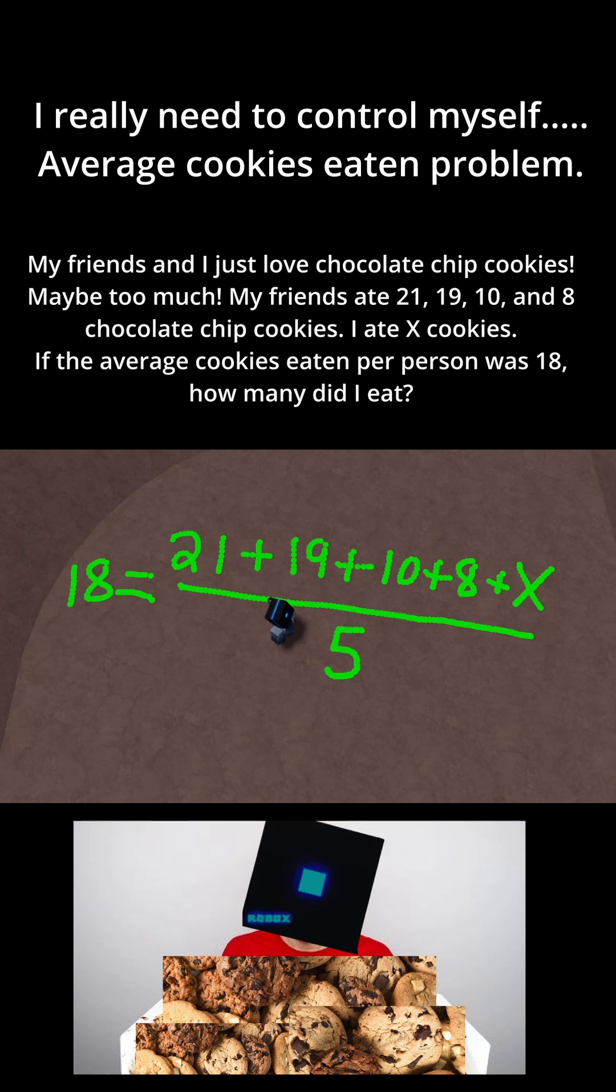And now we have set up an equation that we can use to solve for x. So to solve this equation, let's multiply both sides by 5 to get rid of the 5 in the denominator.